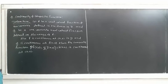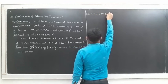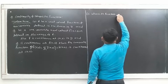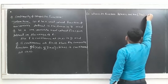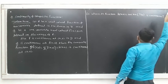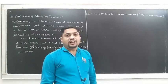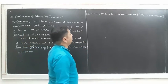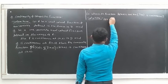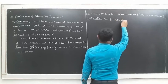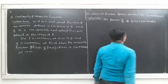So we will take one example on this: where is the function h(x, y) = arctan(y/x) continuous? Arc tan means tan inverse. To solve this, we use the composite function definition. Let f(x, y) = y/x and g(t) = arctan(t), where t is a real number.